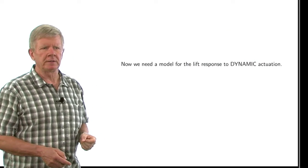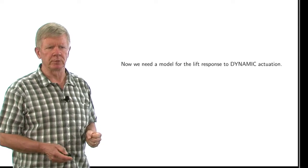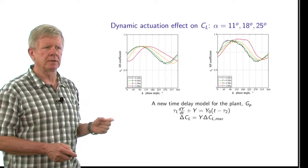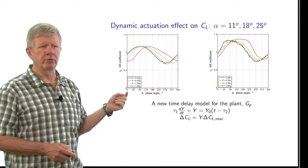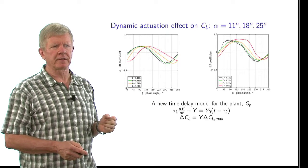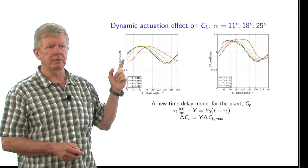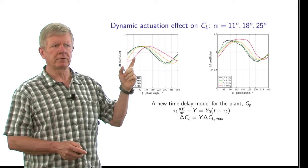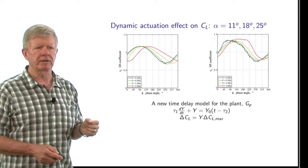So the next thing we need is a model that tells us how the lift responds to dynamic actuation, where the blowing jet is varying with time. Here's a plot of the lift coefficient versus phase angle through one cycle of blowing. This left plot corresponds to a fixed angle of attack at 11 degrees. And as the forcing frequency increases, we go from the black curve, which is very sinusoidal in shape, to the red curve that's delayed in time and distorted. So those are the effects that we need to capture.